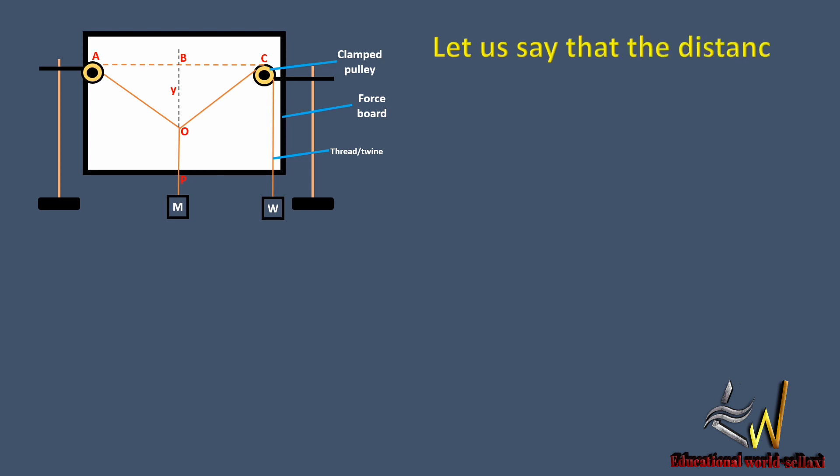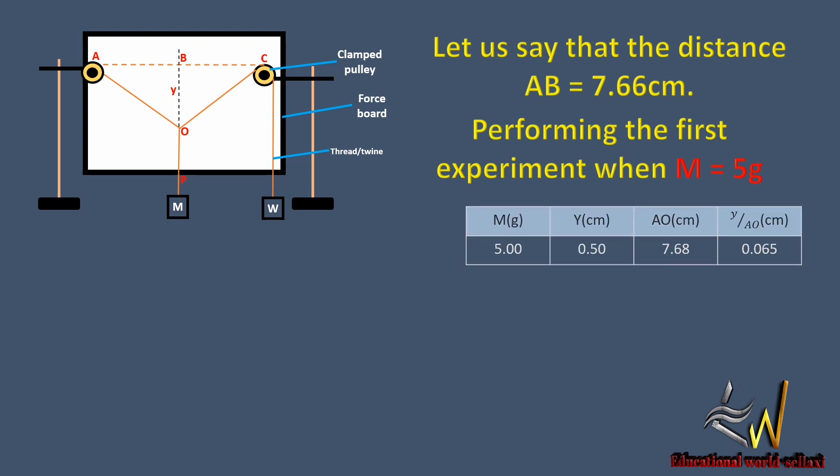So let us say that the distance AB is 7.66 centimeters. Performing the first experiment when M is equal to 5 grams, our values as recorded: when M equals 5 grams, y equals 0.5 centimeters, AO equals 7.68 cm, and y over AO equals 0.065. There is a relationship between mass M and the vertical distance y.